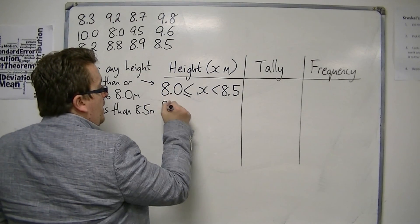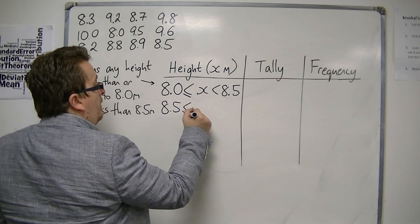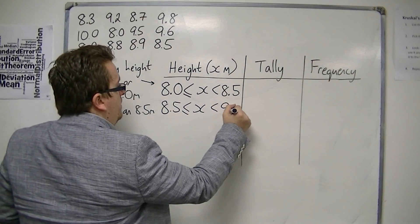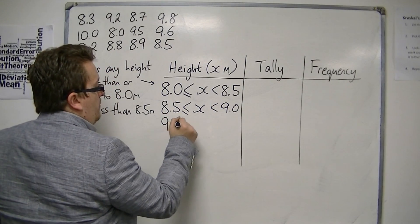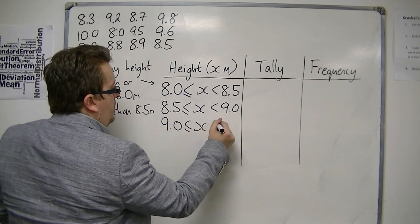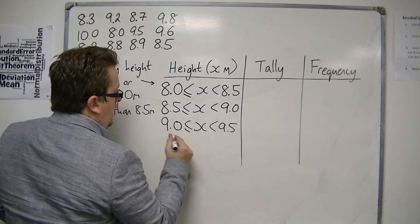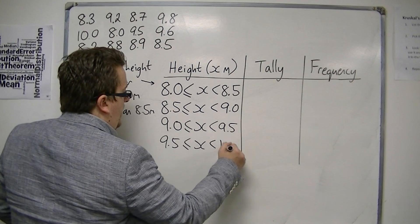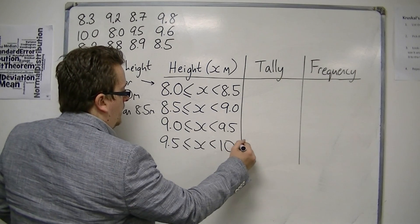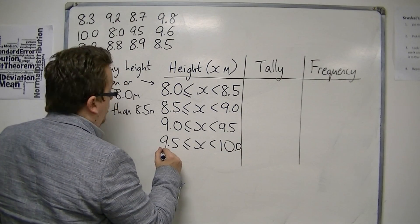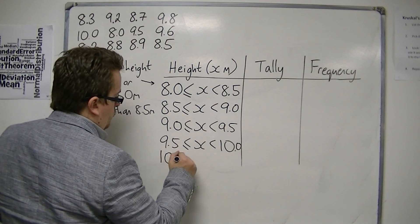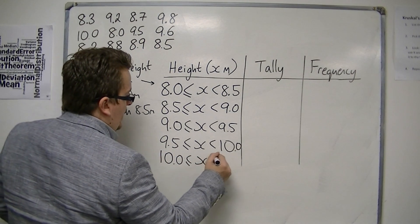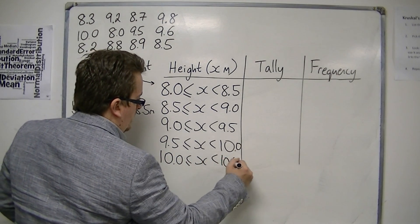So, 8 to 8.5, and then I might have a group of 8.5 to 9, then a group of 9 to 9.5, then a group of 9.5 to 10. And then, of course, I'm going to have to have another group because I know I've got a value of 10.